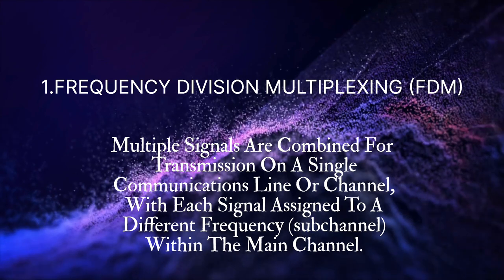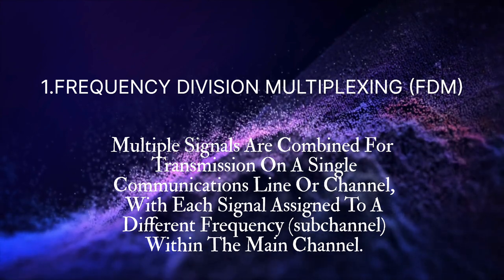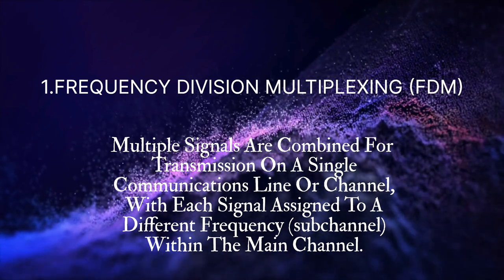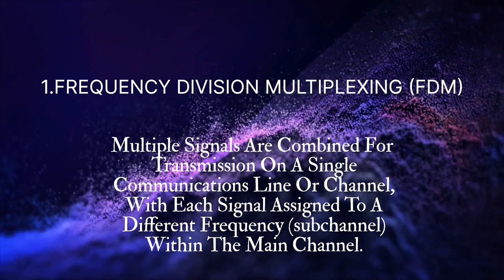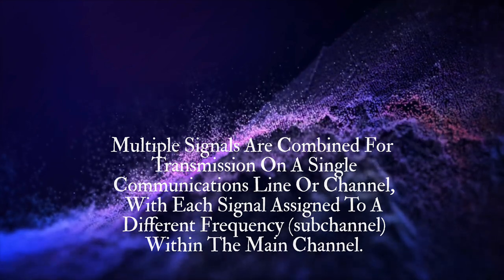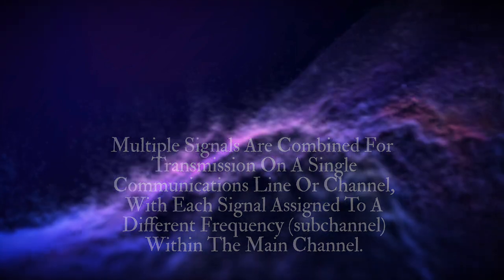Frequency Division Multiplexing: multiple signals are combined for transmission on a single communication line or channel, with each signal assigned to a different frequency within the main channel. This is called Frequency Division Multiplexing, or FDM.